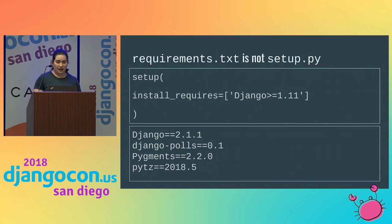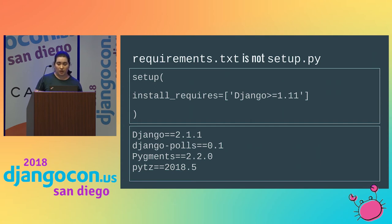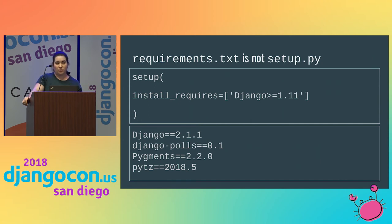I want to speak briefly about the difference between requirements.txt and setup.py. Setuptools has an argument called install_requires that specifies other packages your app depends on and will automatically install them when the package is installed on another person's computer. Setuptools is for specifying dependencies and metadata for a package. requirements.txt is a list of packages and their versions generated by pip freeze, for replicating the packages installed in someone's virtual environment — basically arguments passed to pip install when setting up a development environment.